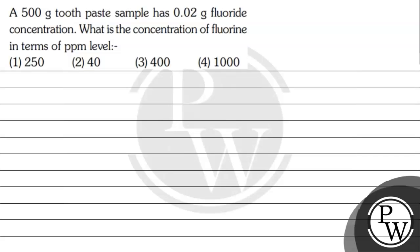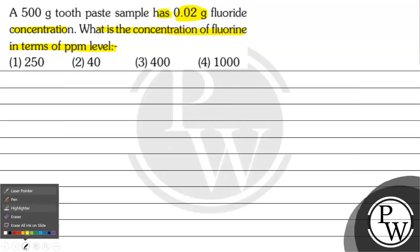Hello, let's read this question. The question says a 500 gram toothpaste sample has 0.02 gram of fluoride concentration. What is the concentration of fluorine in terms of PPM level? Option 1 is 250, option 2 is 40, option 3 is 400, or option 4 is 1000.